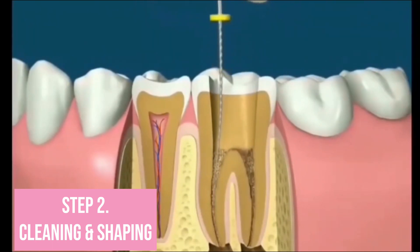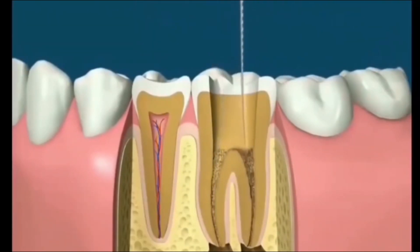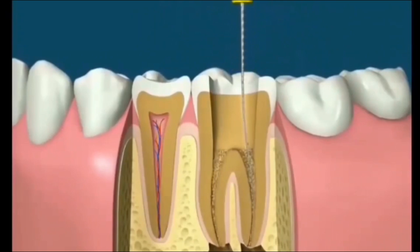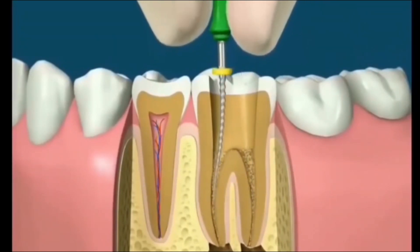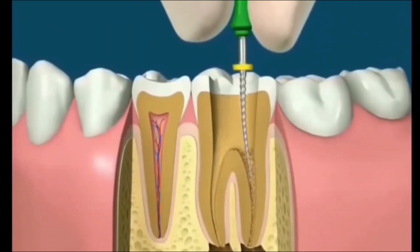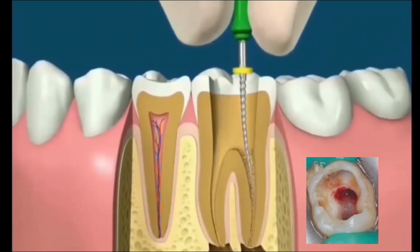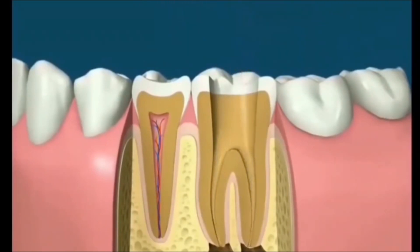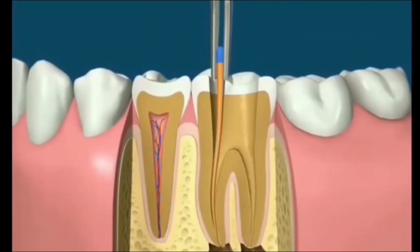The manual method of root canal treatment involves using increasing file sizes that gently clean and shape these canals. A tooth may have one or more canals. Using the manual treatment method, filling the canals involves checking the cone size.